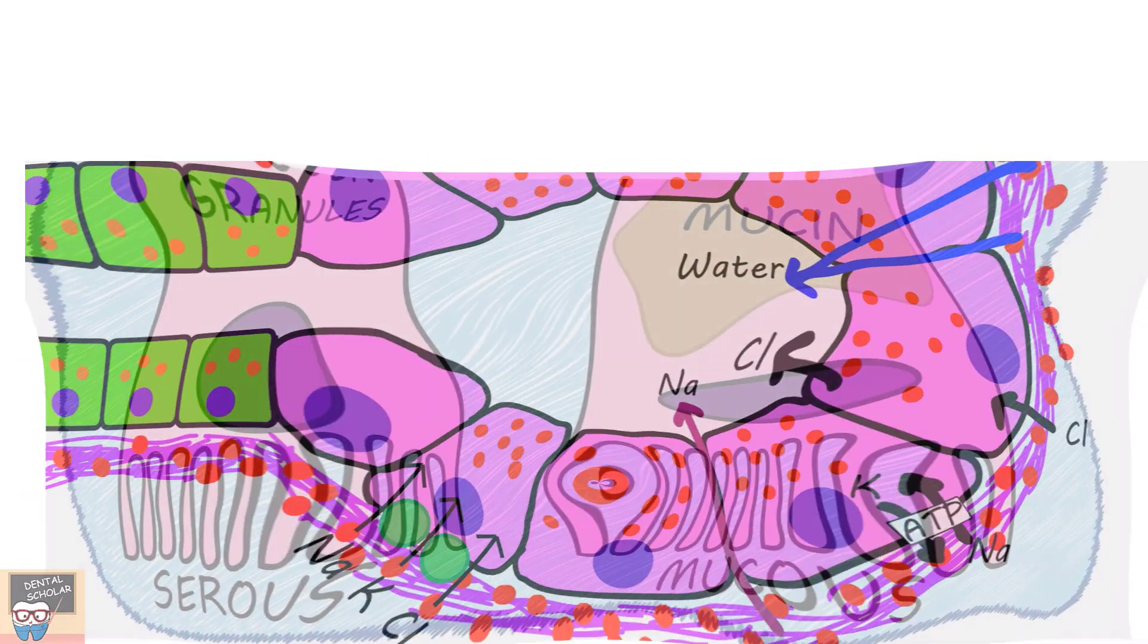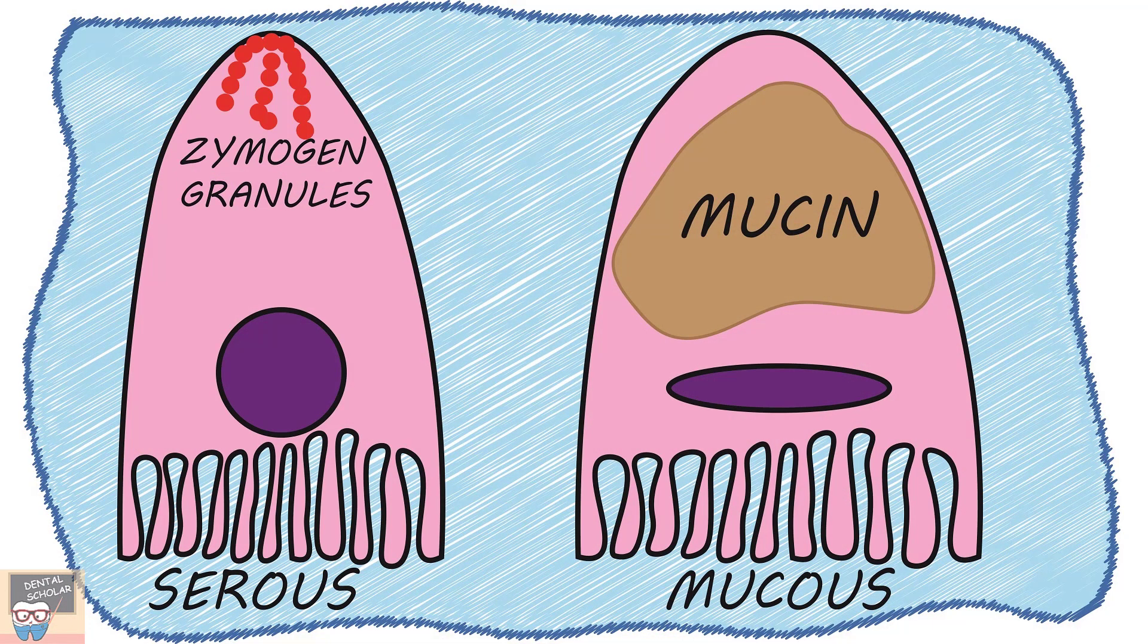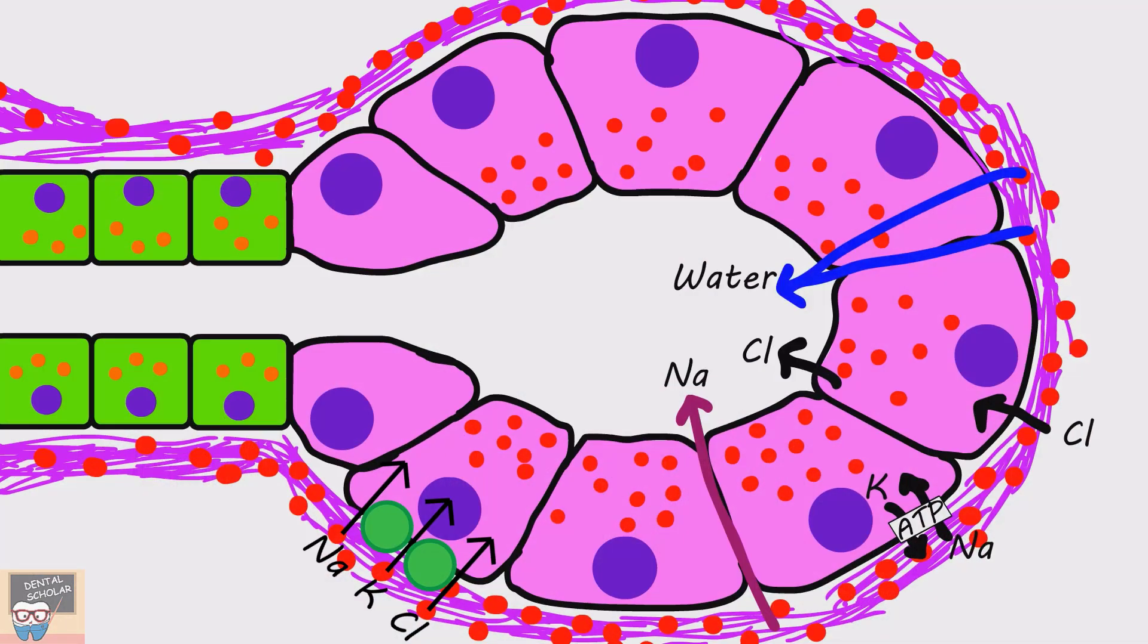The secretory cells are of two types, serous and mucus. The serous cells produce protein containing saliva and the mucus cells produce saliva that is rich in mucin. The intercalated ducts, in addition to saliva production, also add lysozyme and lactoferrin into the saliva.